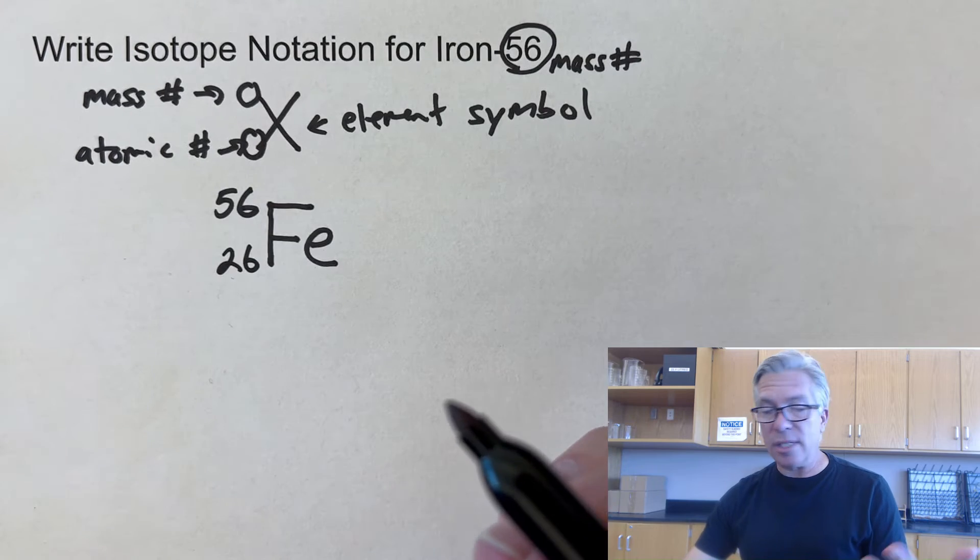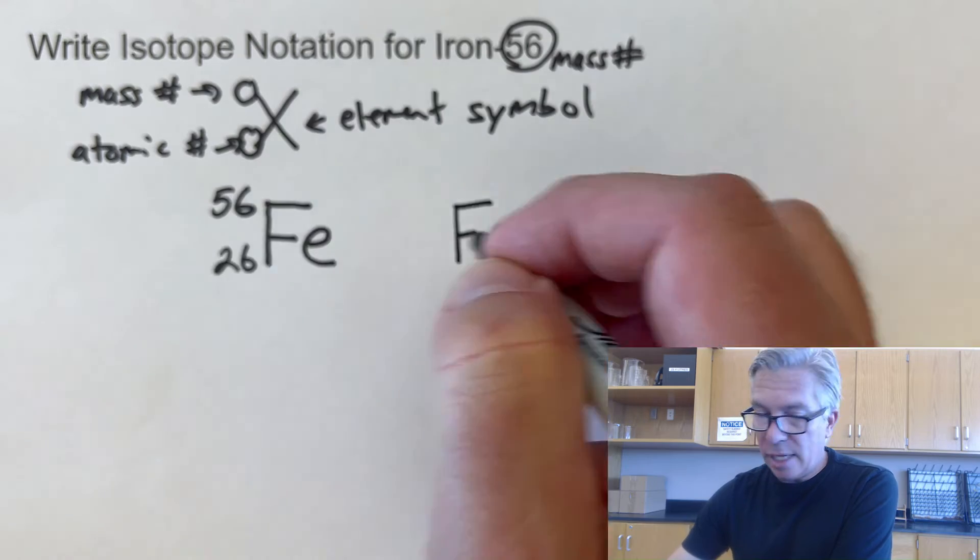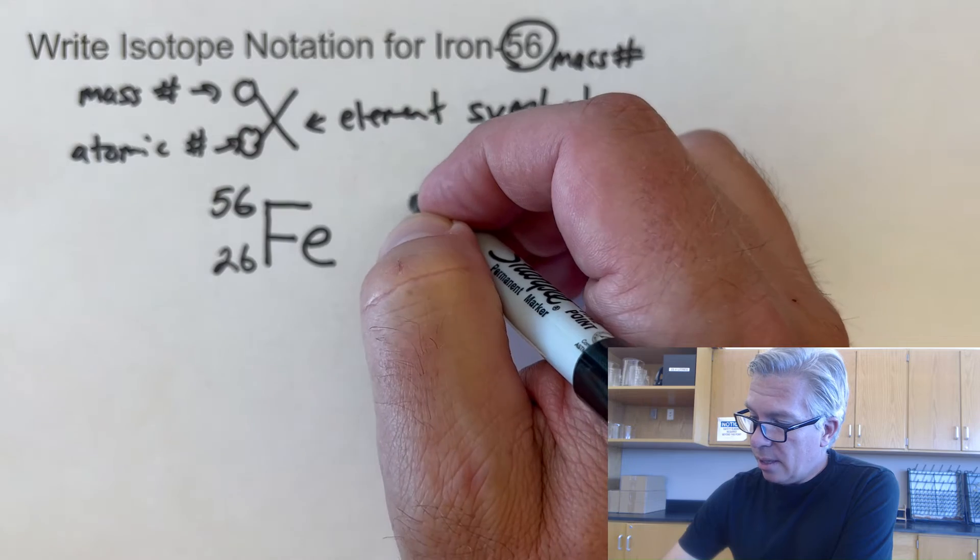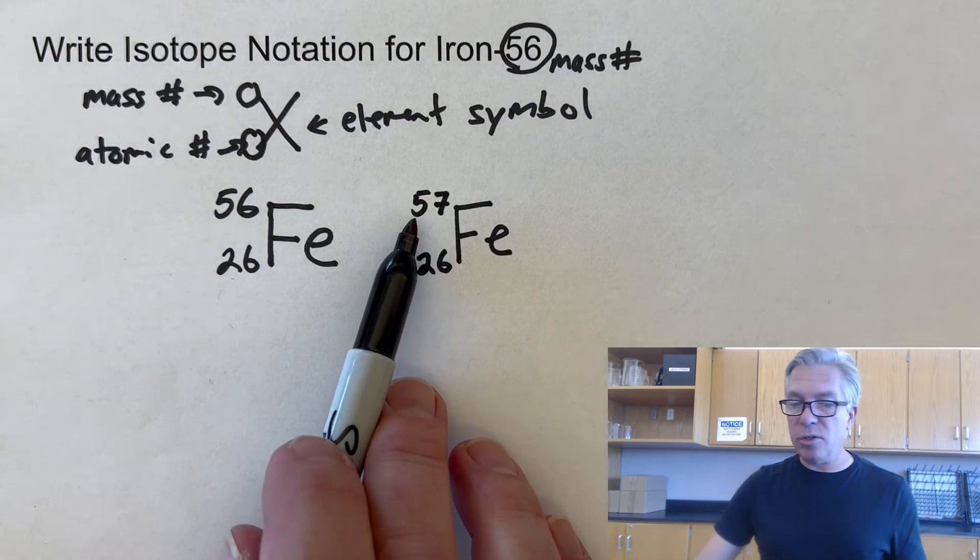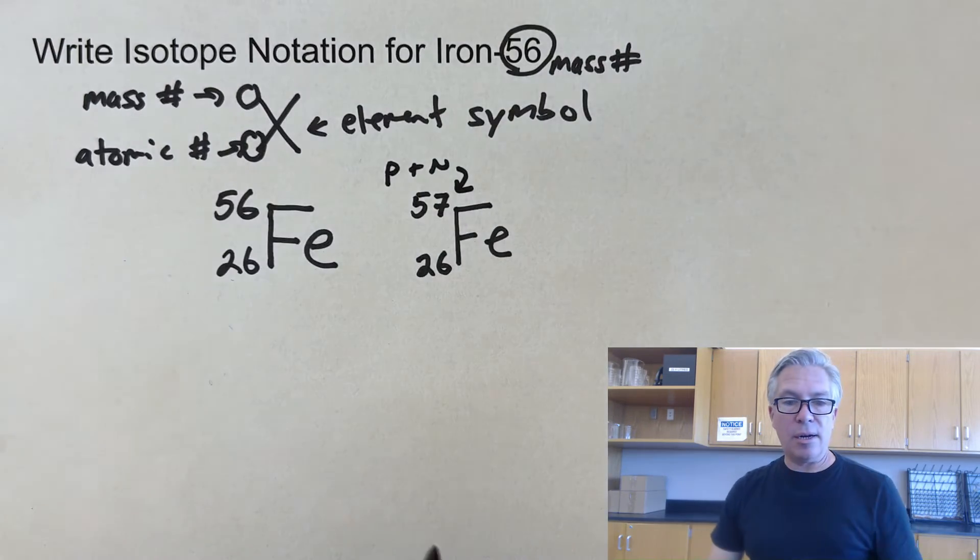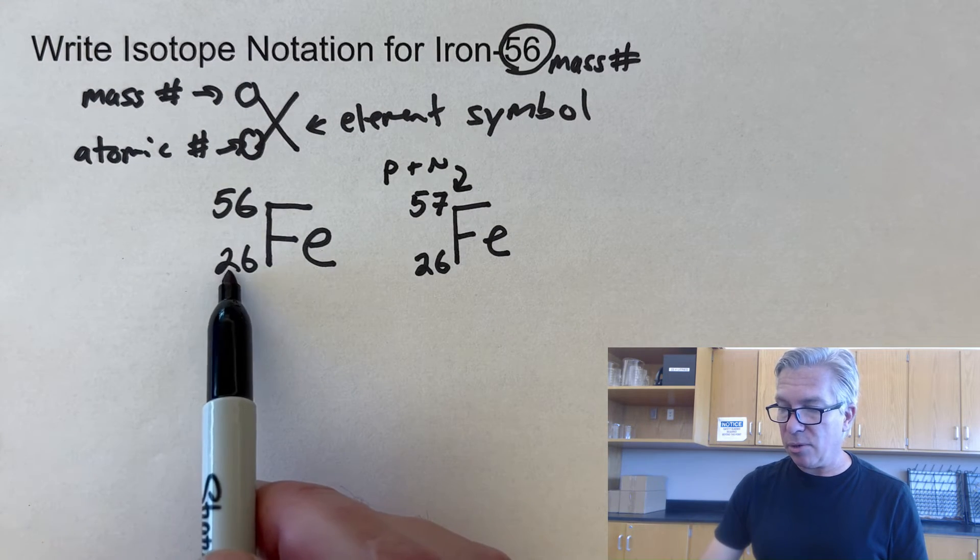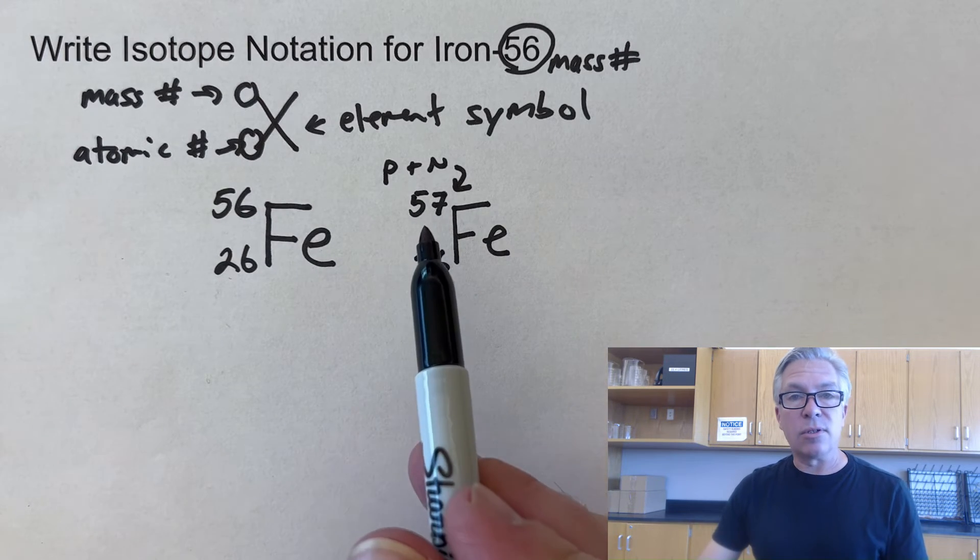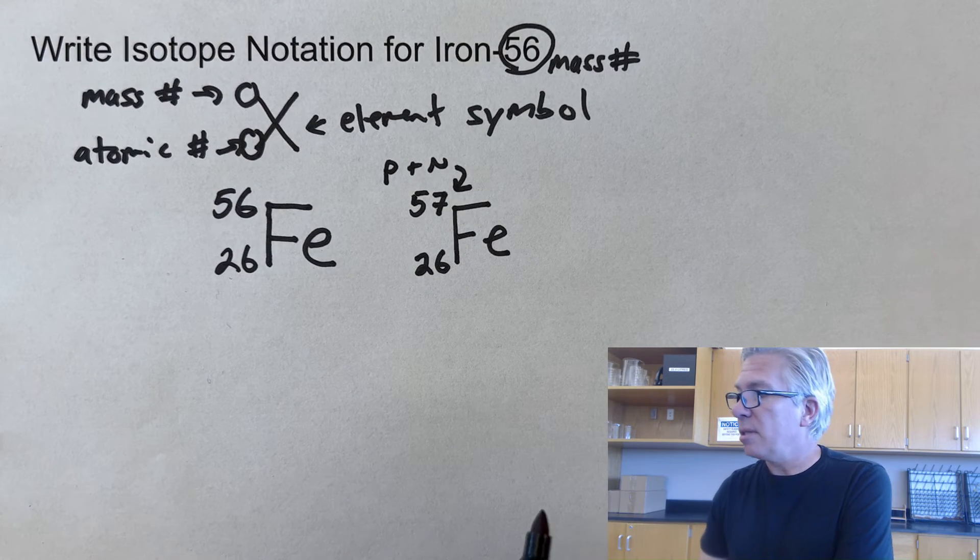Compare that to say iron-57. If I did iron-57, I would just keep the same symbol. They have the same symbol, they have the same number of protons, but a different number of neutrons. Now that is not the number of neutrons. That's the protons plus neutrons in there. And if you ever needed to find out how many neutrons you'd have, you'd have to subtract that. So we'd have 26 protons and 30 neutrons for 56, 26 protons and 31 neutrons for a total of 57. And just those are two isotopes of iron.